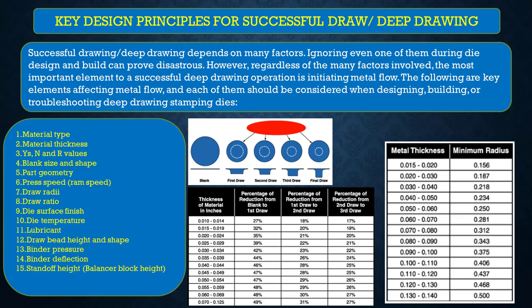There are many factors for a successful draw and deep draw design. When we ignore any one of them, the die prove-out becomes very difficult. Regardless of the many factors involved, the most important element to a successful deep drawing operation is initiating metal flow. The following elements affect metal flow and each should be considered when designing, building, or troubleshooting draw and deep draw stamping dies.